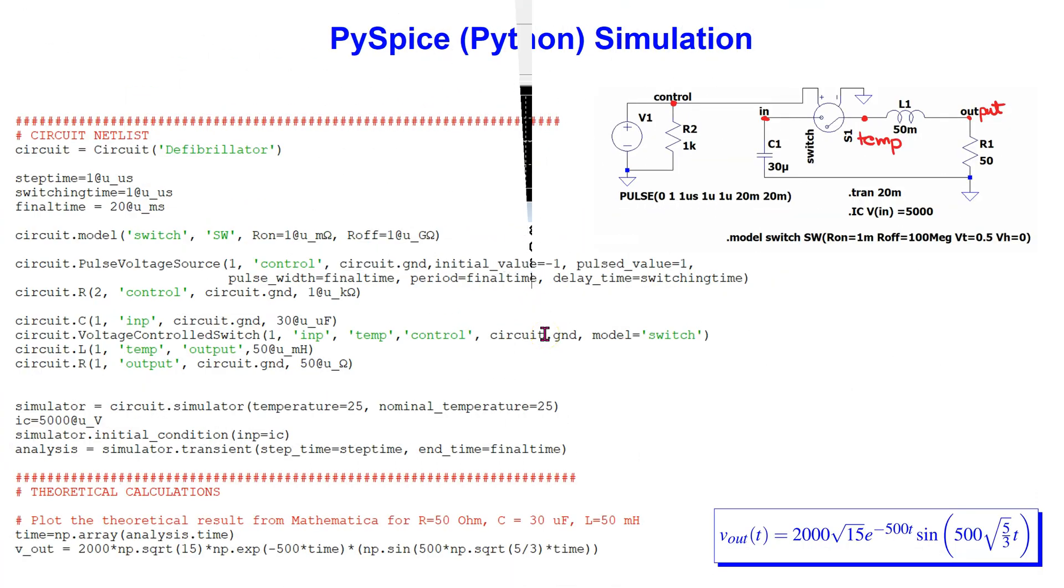Next we look at how to simulate the circuit in PySpice. We define the switch model and the pulse voltage source controlling the switch. We set the switch to close at one microsecond as before.